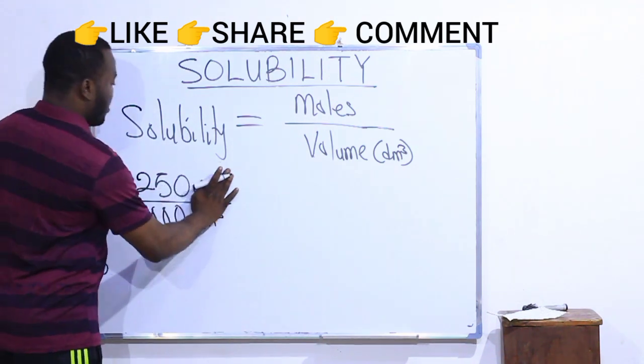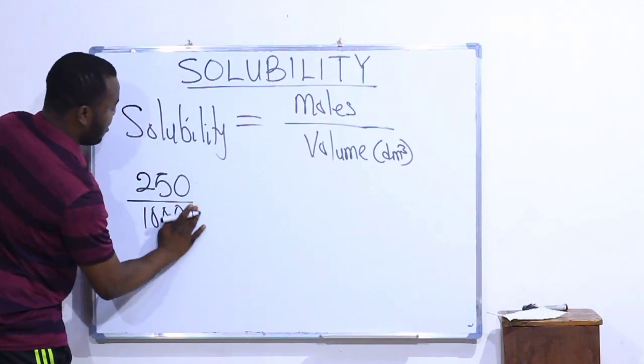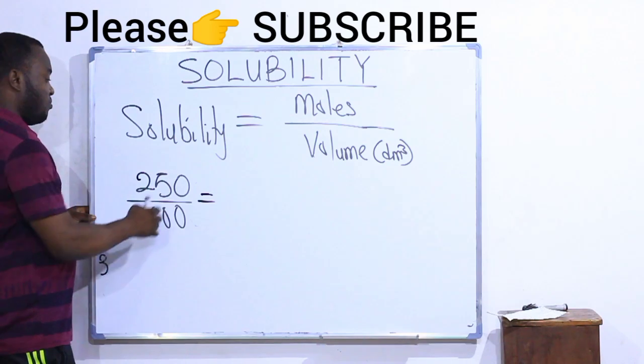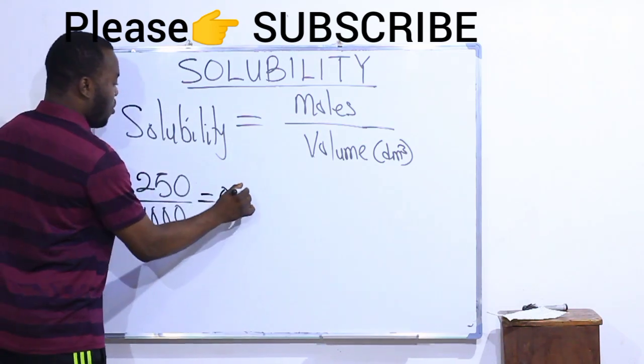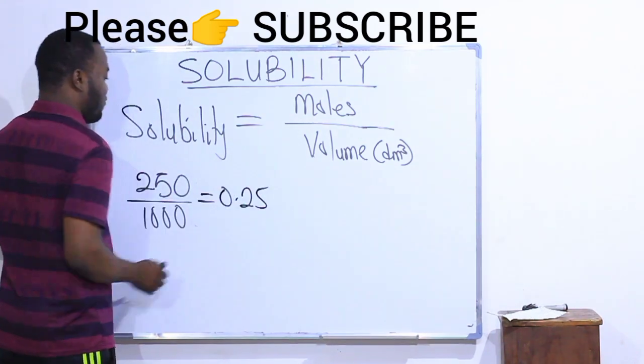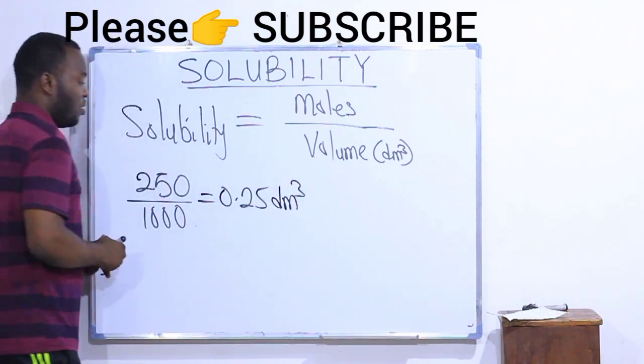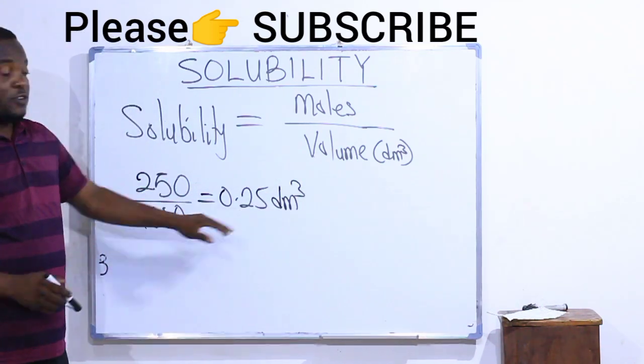If I do this, I will have my answer as 0.25 dm³. This is the volume in dm³.